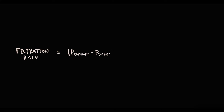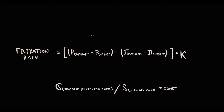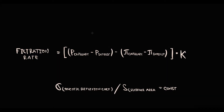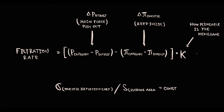Filtration rate is described by the Starling equation. Filtration rate is equal to the hydrostatic pressure difference between capillaries and interstitium, minus the oncotic pressure difference between capillary and interstitium, and is directly proportional to hydraulic conductivity. This is a simplified version of the equation where values such as oncotic reflection coefficient and surface area are considered constant. Hydrostatic pressure difference is the main driving force that pushes fluid out of the capillary. Oncotic pressure difference is the force that draws fluid inside the capillary. Hydraulic conductivity describes how permeable the membrane is. This is the general concept of fluid exchange applicable to every tissue.